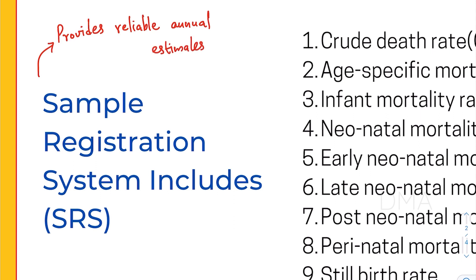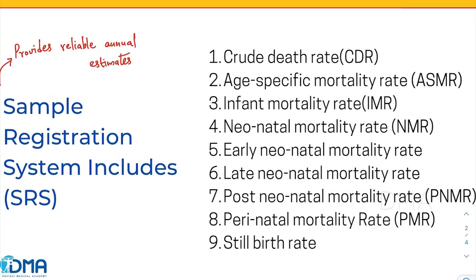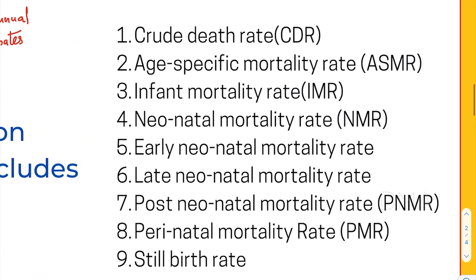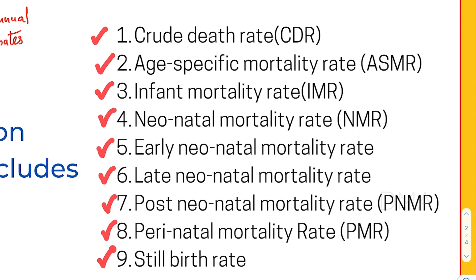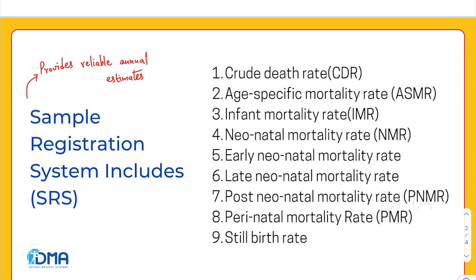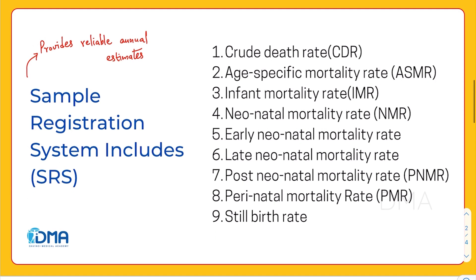Let's look at what this Sample Registration System includes. It includes crude death rate, age-specific mortality rate, infant mortality rate, neonatal mortality rate, early neonatal mortality rate, late neonatal mortality rate, post-neonatal mortality rate, perinatal mortality rate, still birth rate, and also the birth rate in general and some other fertility indicators as well. This data has been provided at the national and sub-national level, and that wraps up our topic of Sample Registration System.